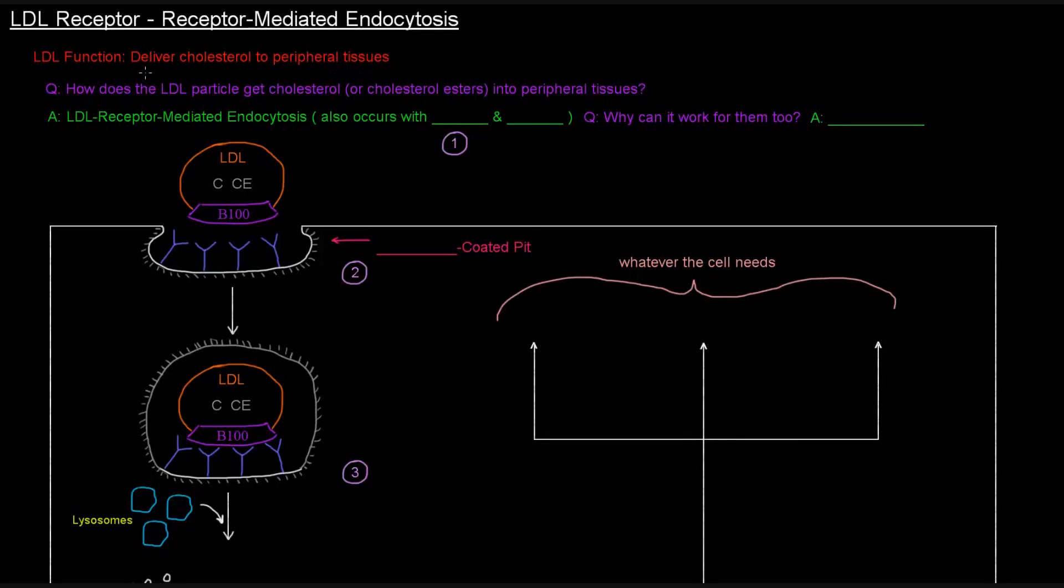We know that LDL functions to deliver cholesterol to the peripheral tissues. The question is, how does the LDL particle get cholesterol or cholesterol esters into the peripheral tissues? Well, it's done by receptor-mediated endocytosis, and this also occurs with VLDL as well as IDL.